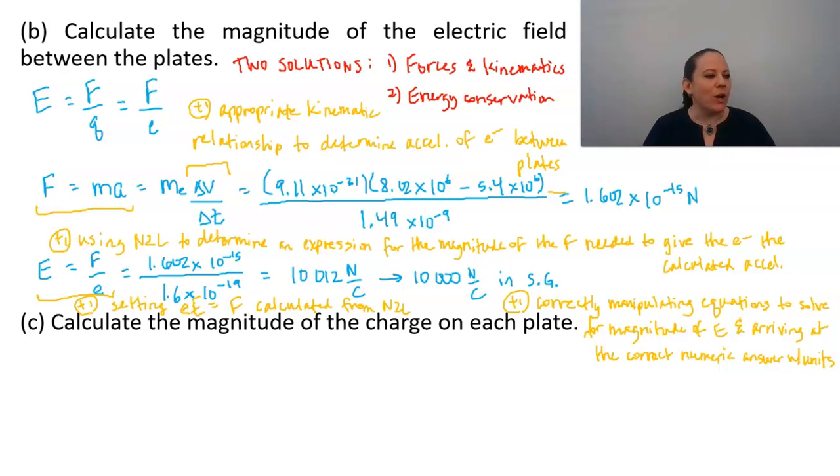All right, so that takes care of our four points for that. And if you opted to use conservation of energy, which you can see in the scoring guidelines on AP Central, then they have four points awarded for that process as well.